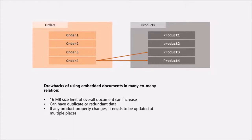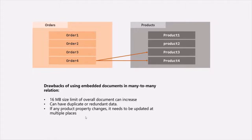And if any product property changes, it needs to be updated at multiple places. Since we have duplicate entries of products in the orders collection, if any product property changes, it will have to be updated for every occurrence of that product in the orders collection. These are some of the disadvantages of using embedded documents for many-to-many relationships, which is why 90% of the time it is recommended to use references. There are some cases where you can use embedded documents, but you need to make sure these three problems do not occur.